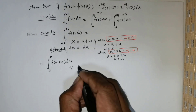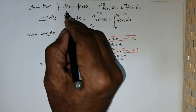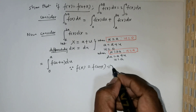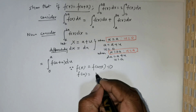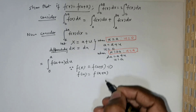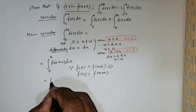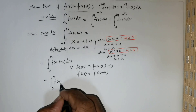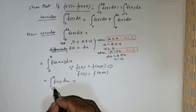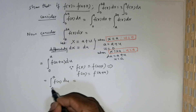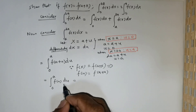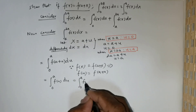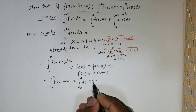Since f of x is given to be f of a plus x, this means f of u is equal to f of a plus u. So the integration can be rewritten as the integral from 0 to a of f of u du, which we can rewrite as the integral from 0 to a of f of x dx, with x being the variable.